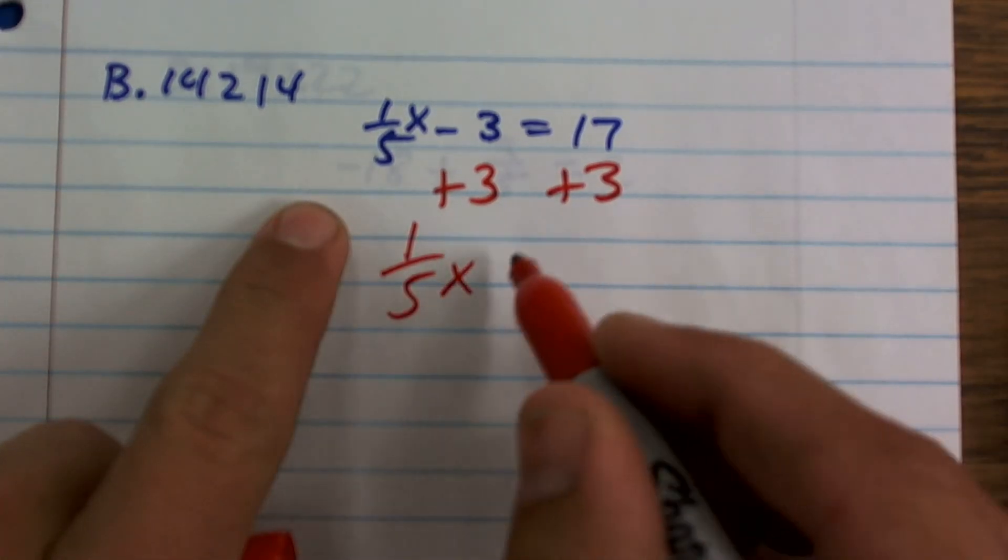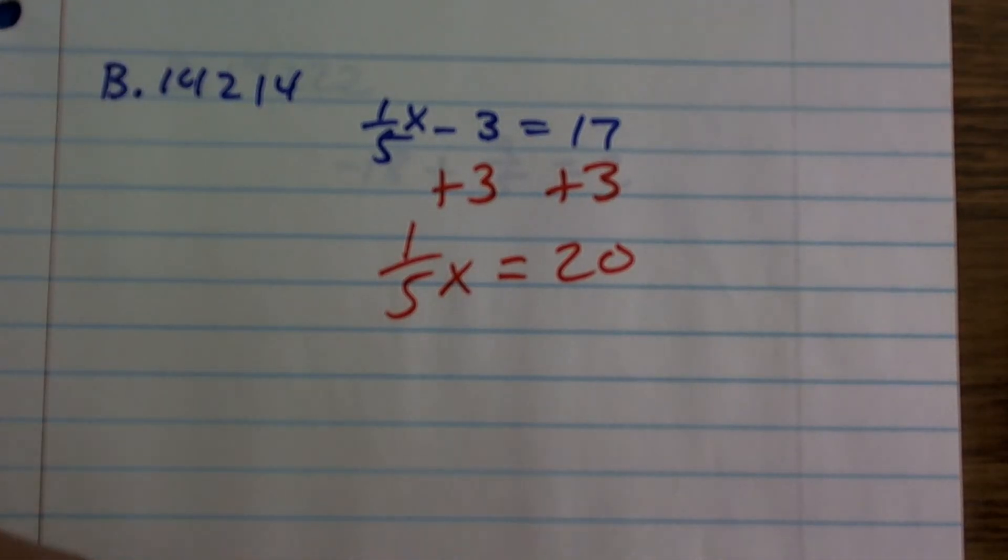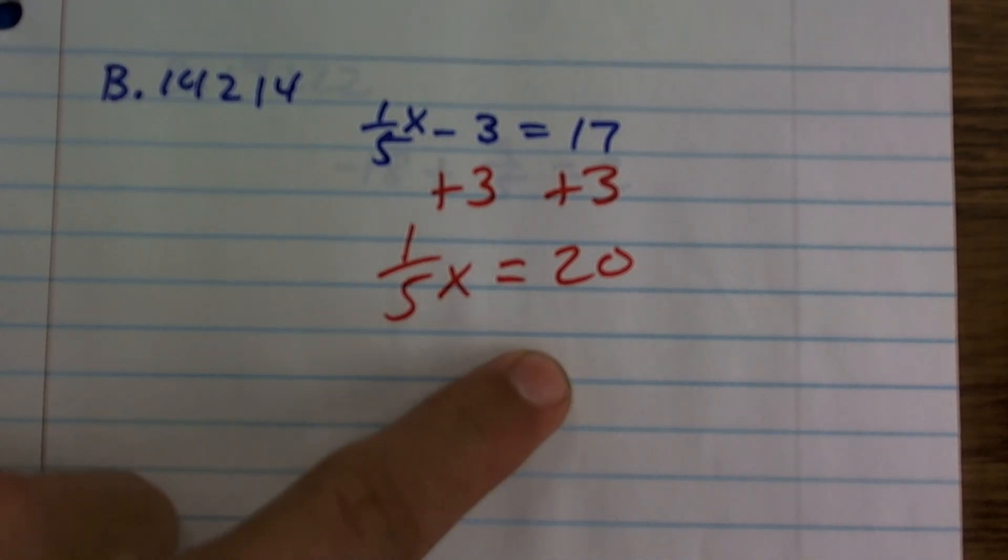There, I have one-fifth x equals 20. Now, remember, you could say one-fifth x - I'm having one-fifth multiplied by x. So we could divide by one-fifth on both sides.